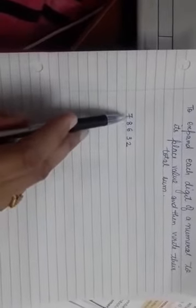I'll explain it with the help of one example. I have this number 78632. Each digit has its place value. First of all, what will be the place value of 2? It is 2 into 1, that is 2.